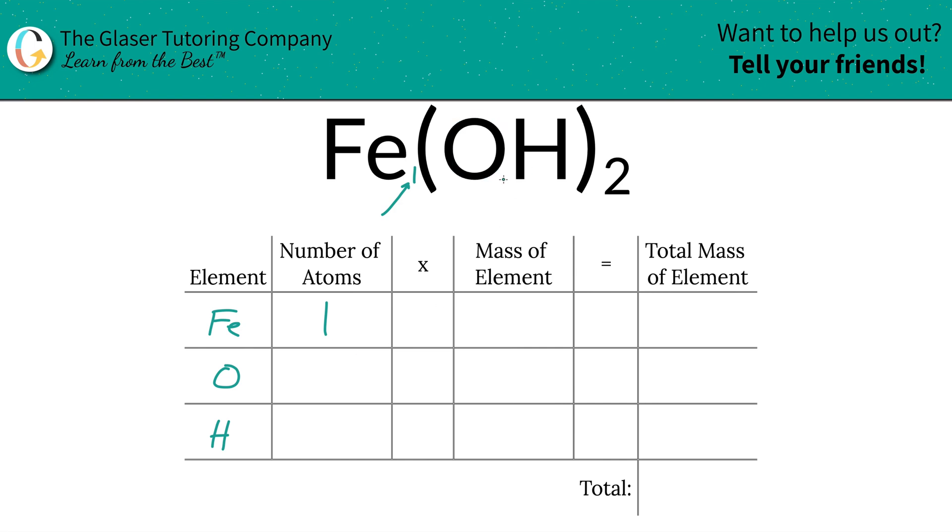There's also one oxygen here. However, oxygen is part of the polyatomic anion hydroxide, and you have two of them. Therefore, you have two oxygens. What you can do is simply take this subscript and multiply it by the outer subscript. So inner subscript times outer subscript. So you got two oxygens. Same thing for hydrogen. Inner subscript times the outer subscript. So you got two hydrogens.